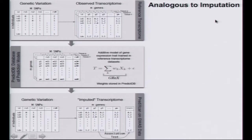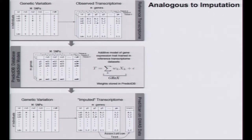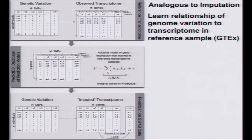We're going to focus on just the genetically determined part of transcript levels and look at the association of that phenotype with disease. This finesses the confound problem and is very similar to the ideas in genome imputation. With genome imputation, we use 1000 Genomes as the reference panel to learn correlations between DNA variants due to linkage disequilibrium, then use that information so that when we've genotyped a subset of variants with a genotyping chip, we can impute millions of additional variants.